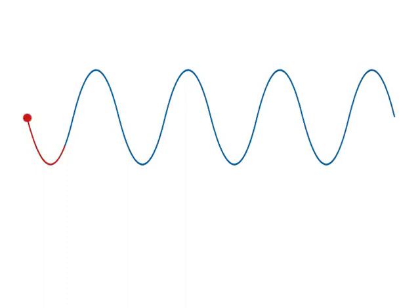One completion of the repeating wave pattern is called a cycle. The time it takes to complete one cycle of the wave is called the period.